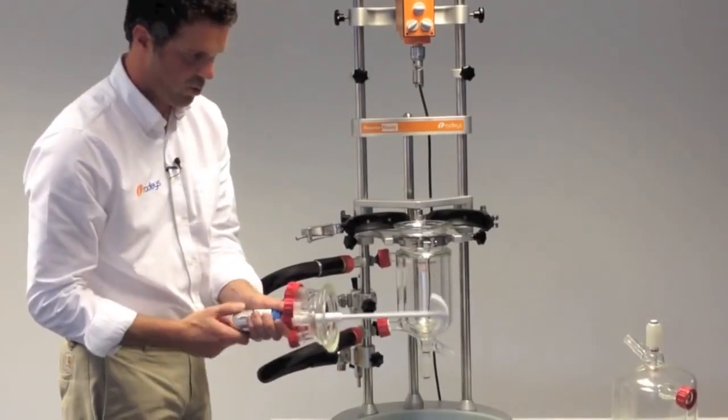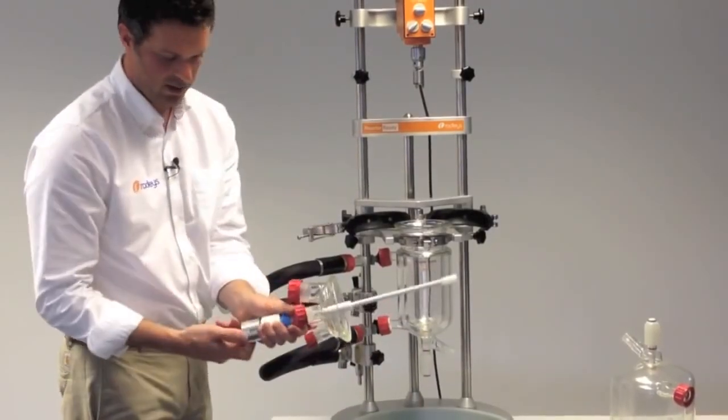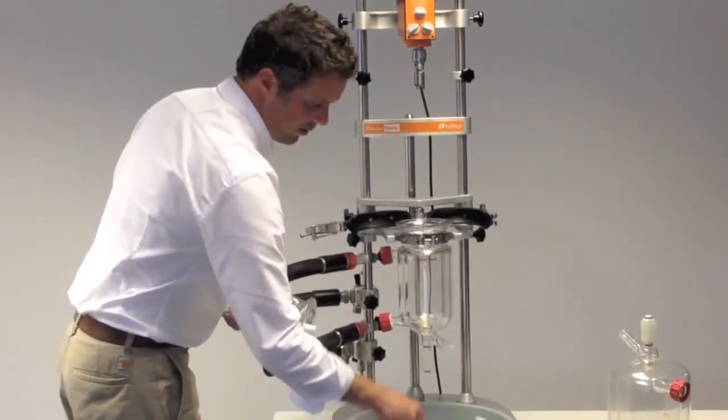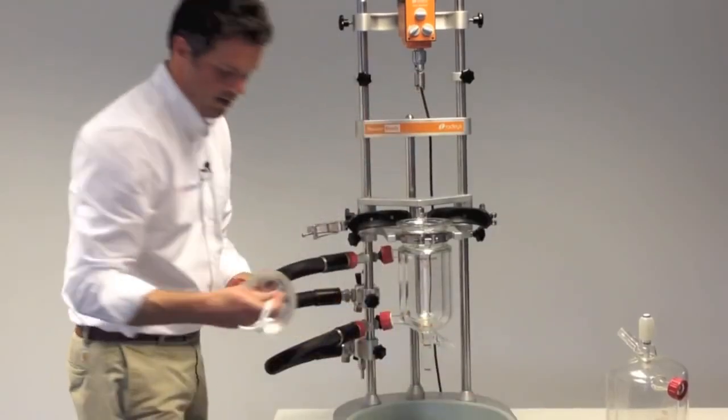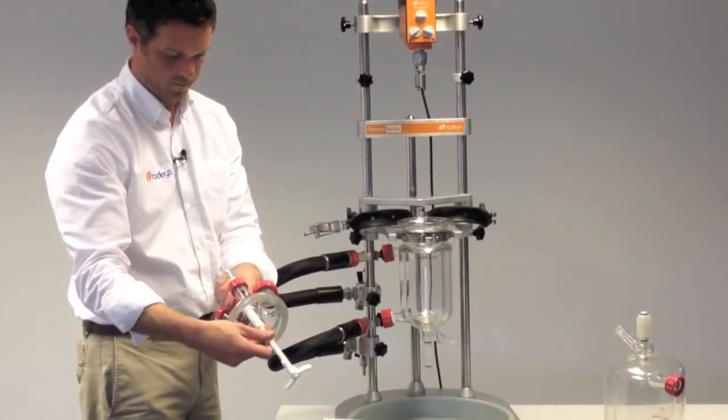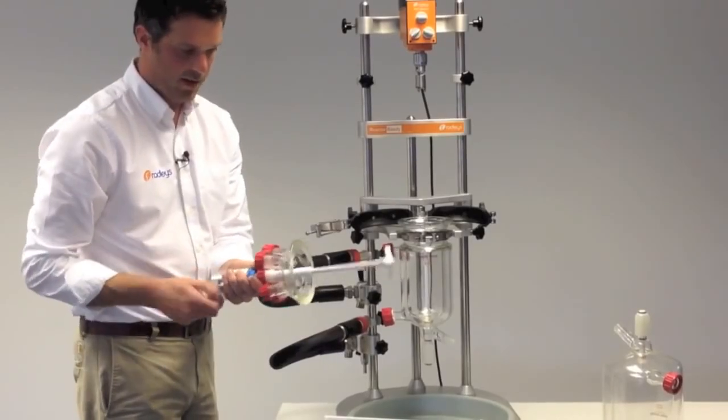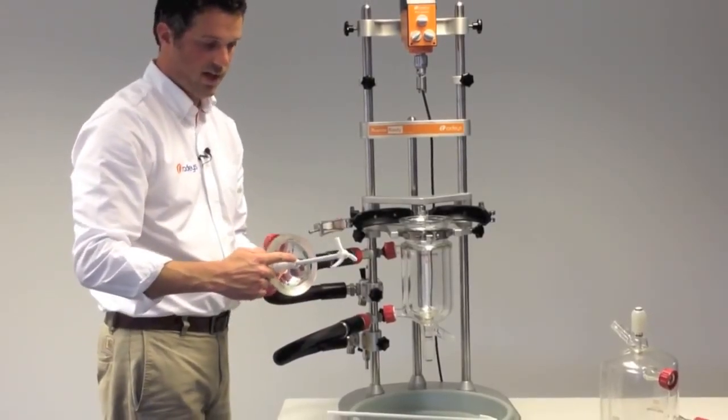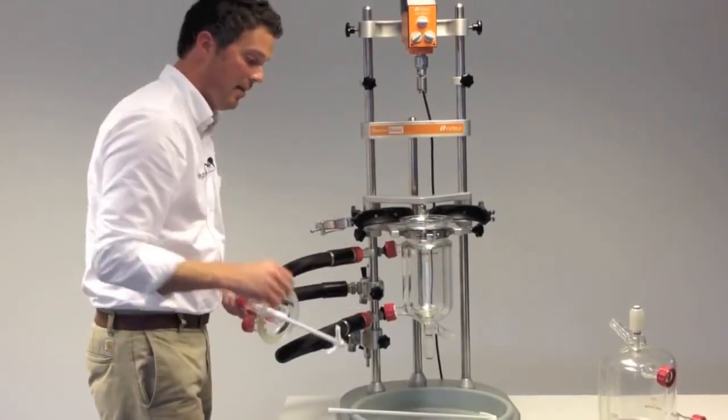I'll just change the stirrer for the smaller 1 liter size. You just undo the PTFE stirrer guide at the top and then you can slide in the new stirrer. The stirrer guide is extended in the bottom portion, which stops any whipping that you can sometimes get in the larger vessels.